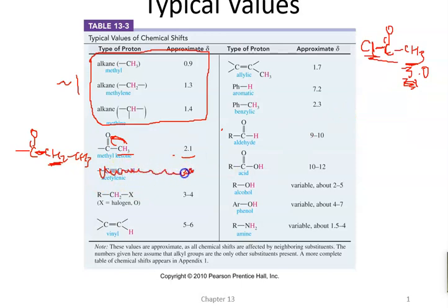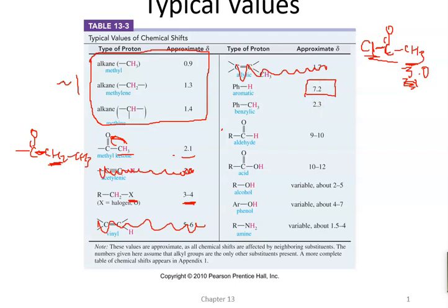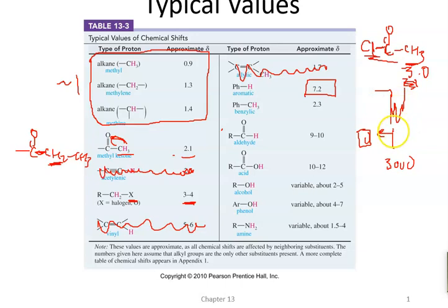Hydrogens next to electronegative atoms like halogens and oxygens are roughly in the 3 to 4 range. Aromatic hydrogens are in the 7 range — not many other things are at 7, so it's very characteristic. In IR, it was sometimes hard to tell if you had aromatic C–H stretches. But with NMR, if you see peaks at 7, it's aromatic — no question. Using IR together with NMR lets you analyze your compound and prove what you have without doubt.